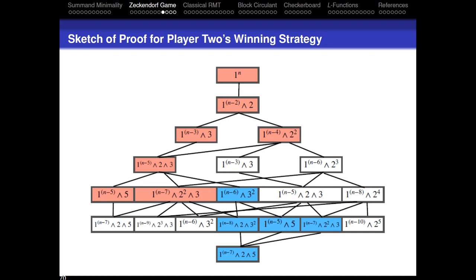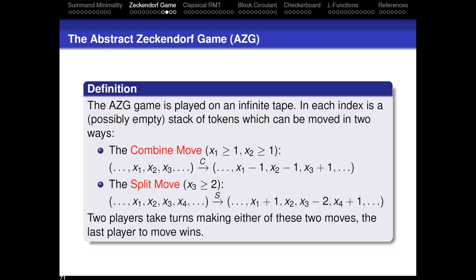I'm going to turn it over to Faye now, who is going to say a few words about the generalizations they are looking at, which clean up a lot of the notation. This is the game often called the Abstract Zeckendorf Game — the AZG. This game gets rid of the boundary conditions which Professor Miller conveniently swept under the rug.